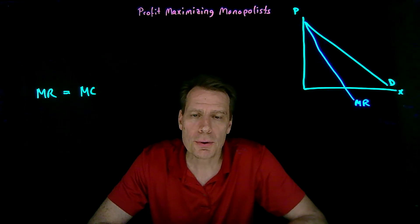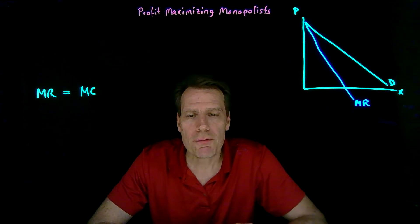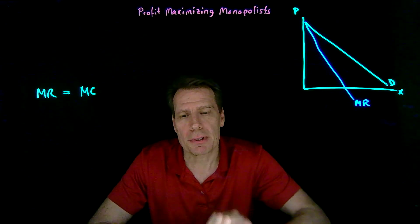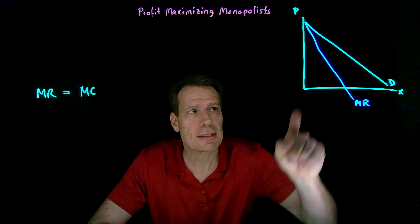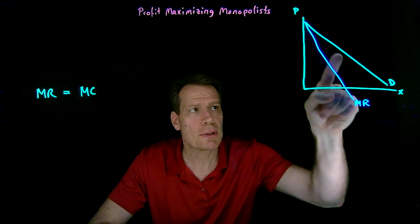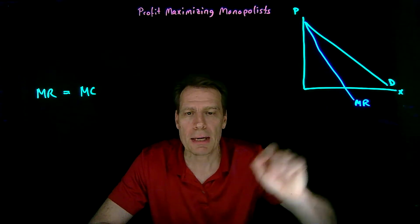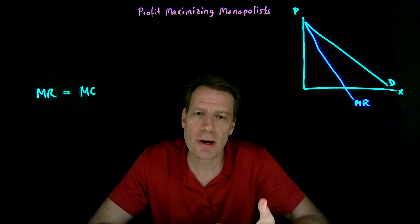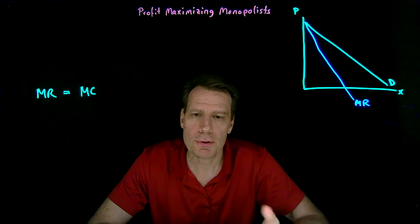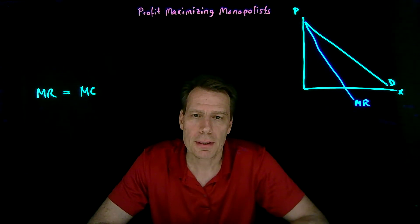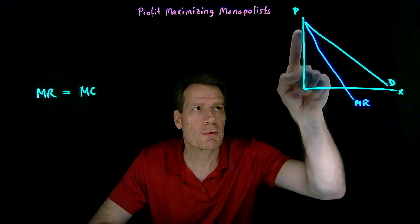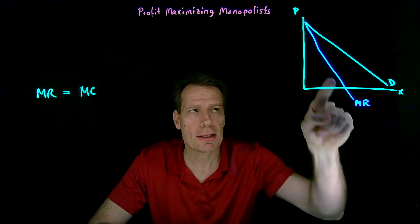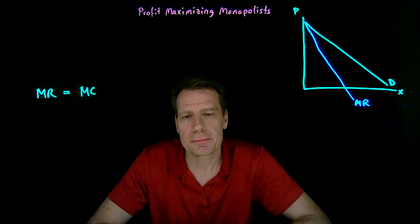We're now going to turn to profit maximization for a monopolist — a monopolist who faces a downward-sloping market demand curve from which we can derive the marginal revenue curve. When the demand curve is linear, the marginal revenue curve has the same intercept and twice the slope.